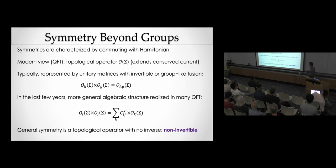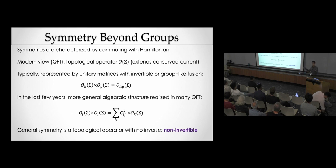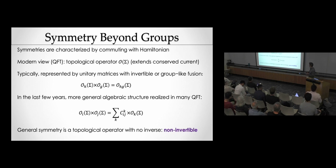In standard examples, such symmetries are represented by unitary matrices with an invertible or group-like fusion rule. You take two operators labeled by H and G, smash them together, and get the one labeled by HG, where these are group labels. But in the last few years, we've been studying a more general algebraic structure where this fusion rule is more complicated: when you fuse topological operators together, you don't get a unique right-hand side — instead you get some sum with coefficients. In general, these topological operators don't have an inverse; they're not represented by unitary operators acting on Hilbert space. We call that non-invertible symmetry.